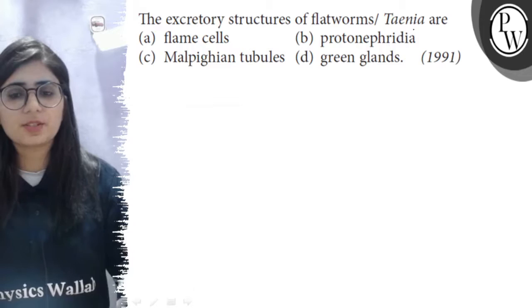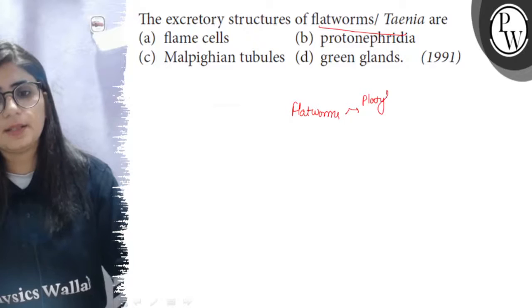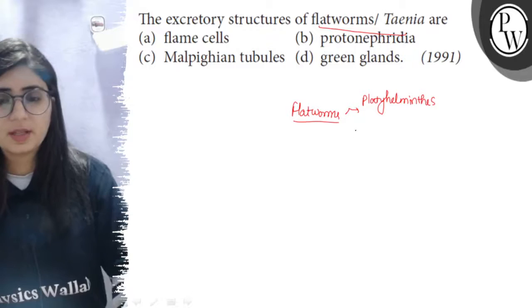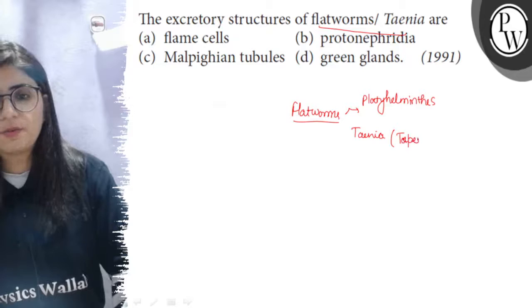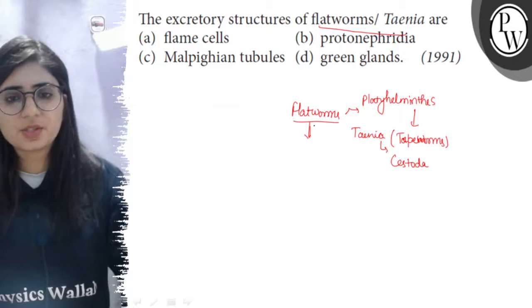Hello bhajjo, let us see the question: the excretory structures of flatworms/Taenia are. Flatworms are the platyhelminths; they have a dorso-ventrally flattened body so they are known as flatworms. And the Taenia or tapeworm are the members of phylum platyhelminthes and they belong to class Cestoda.